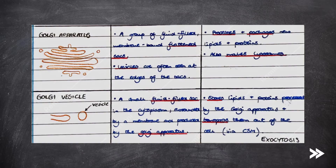Next, we have the Golgi apparatus. The Golgi apparatus is a group of fluid-filled, membrane-bound, flattened sacs. Vesicles are often seen at the edges of the sacs. The Golgi apparatus processes and packages new lipids and proteins, and also makes lysosomes.